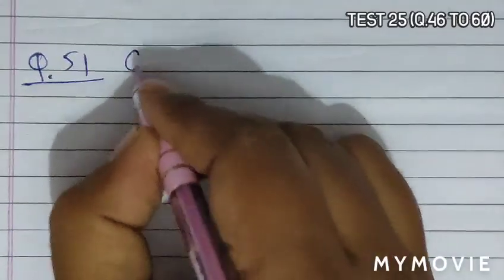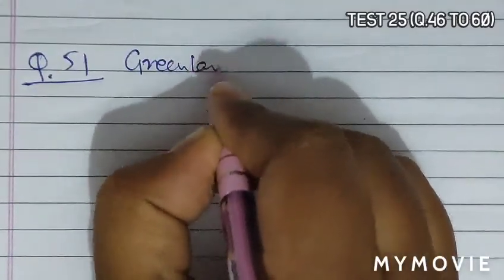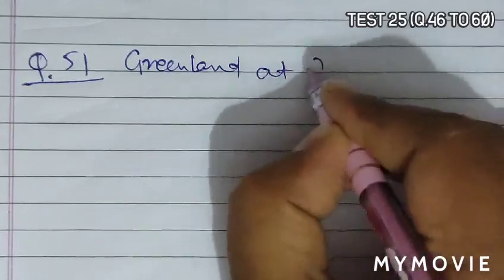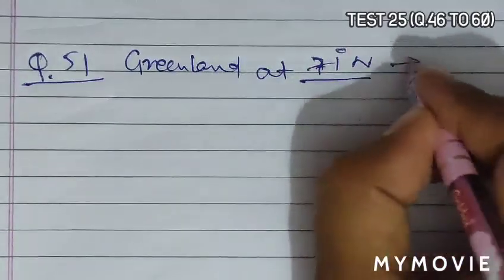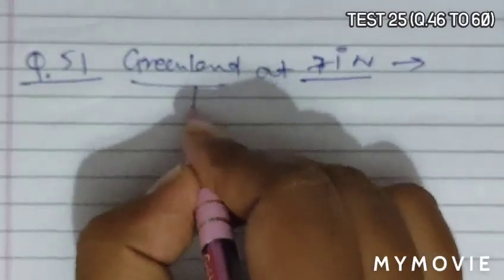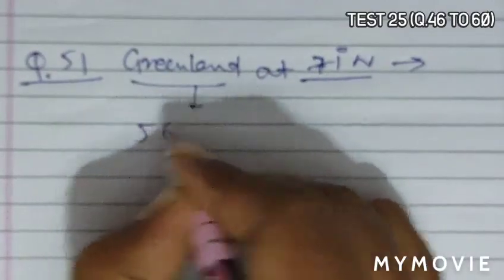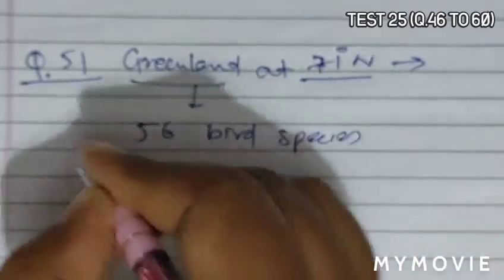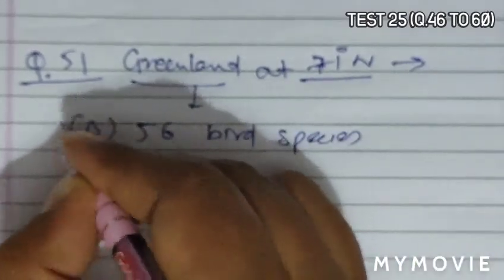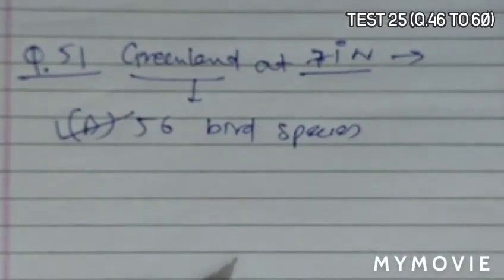Question 51 asks that Greenland at 71 degrees North - how many species of birds? Greenland at 71 degrees North has 56 bird species. So B becomes the correct answer. It is again a fact-based question.